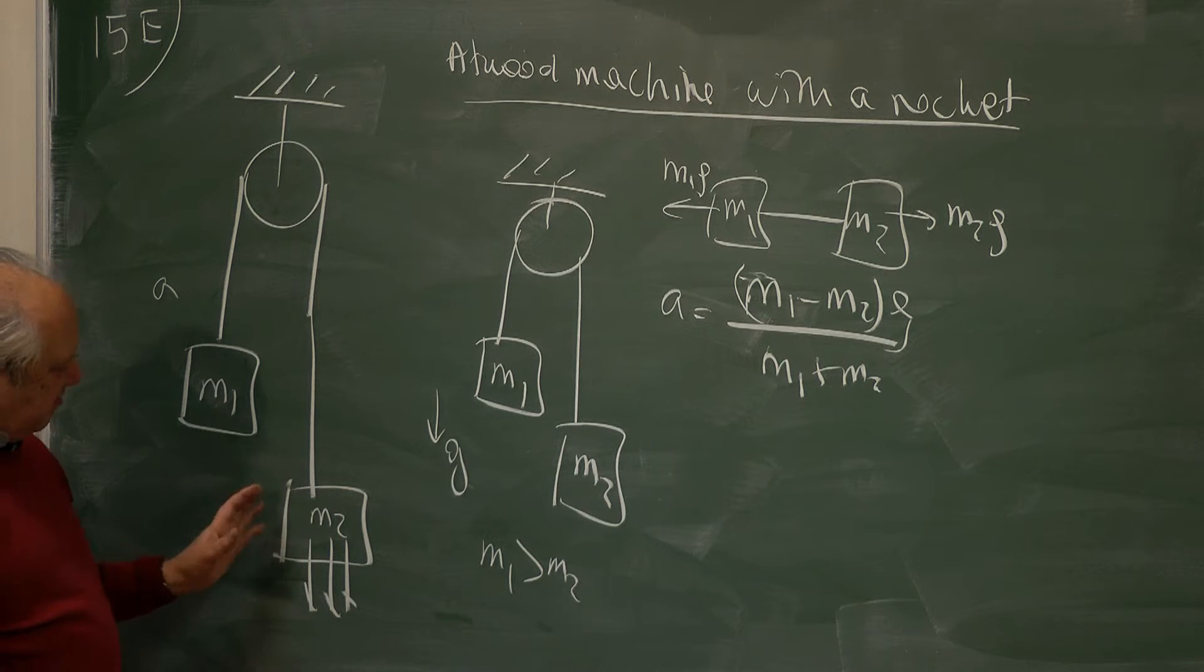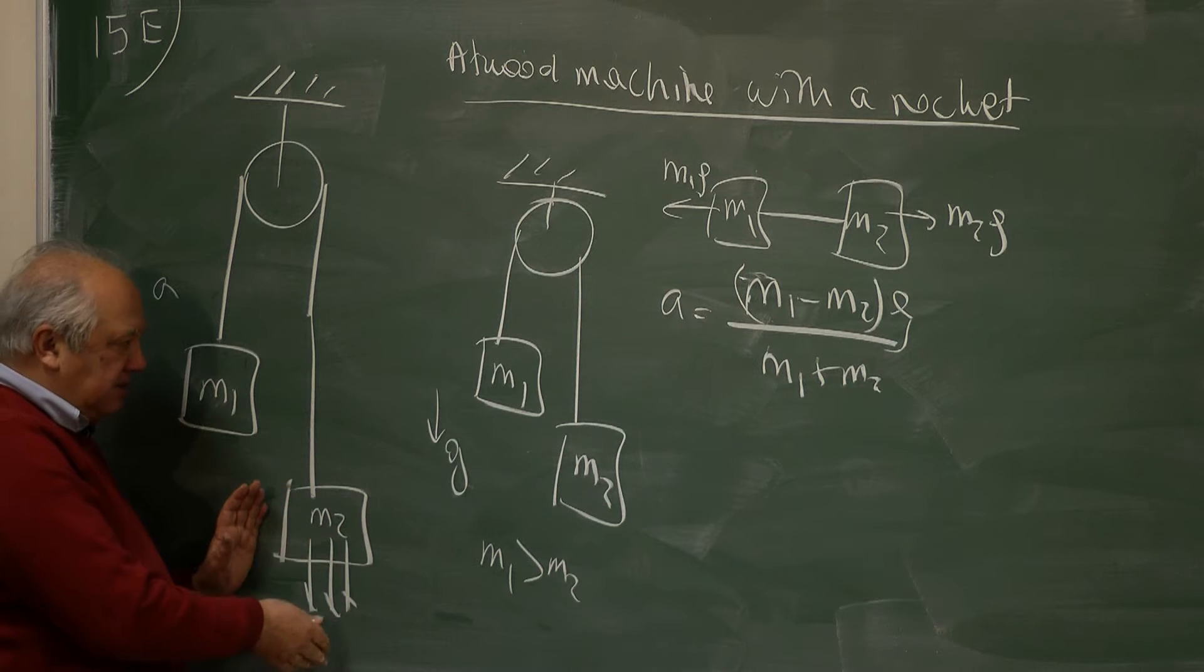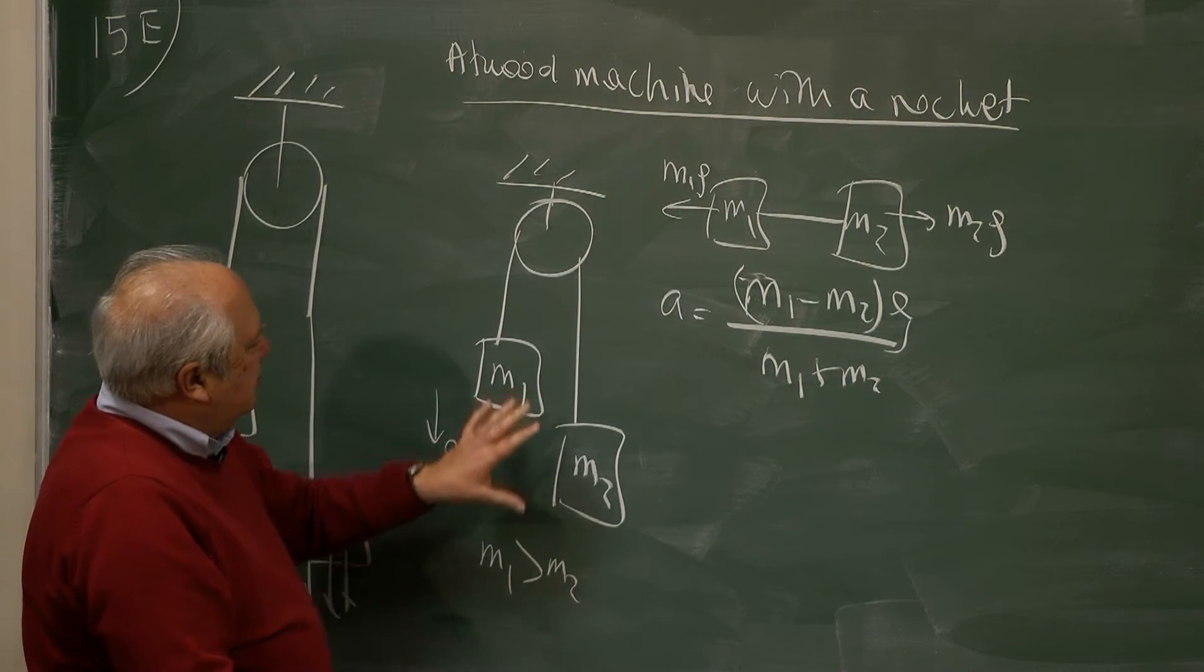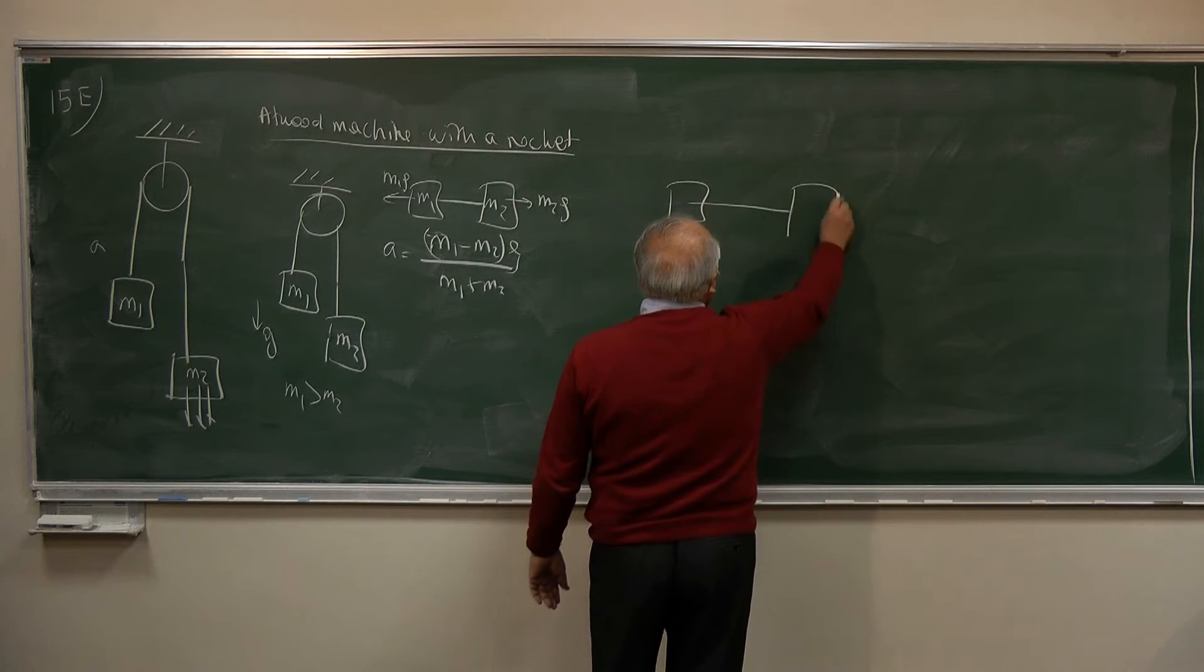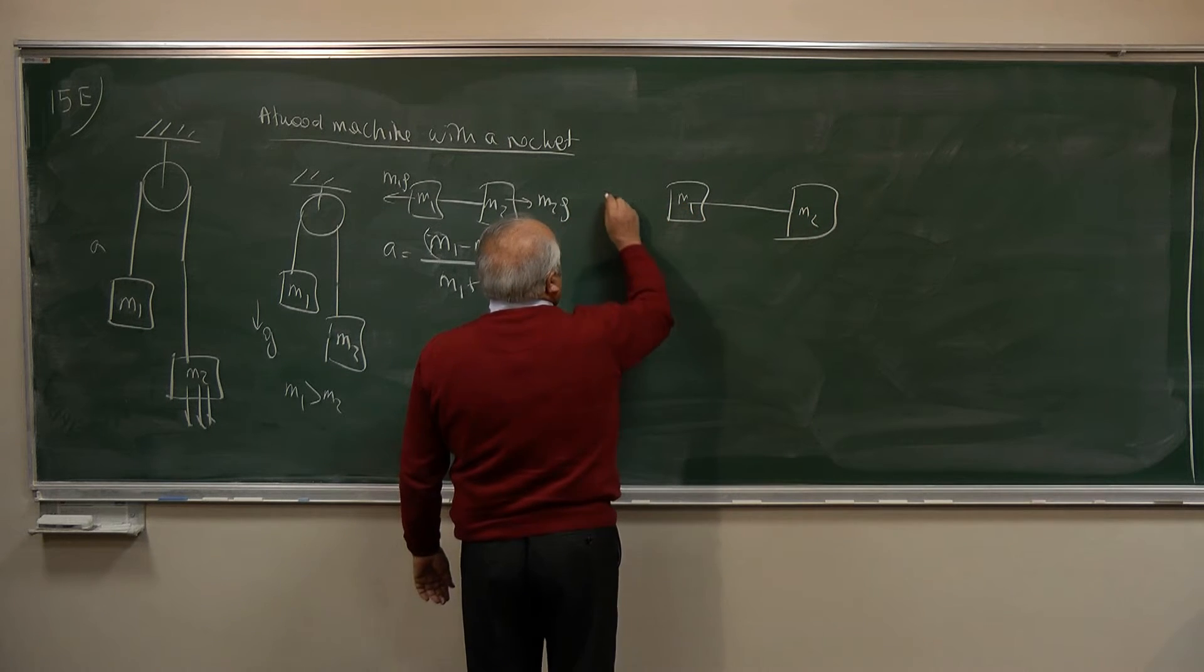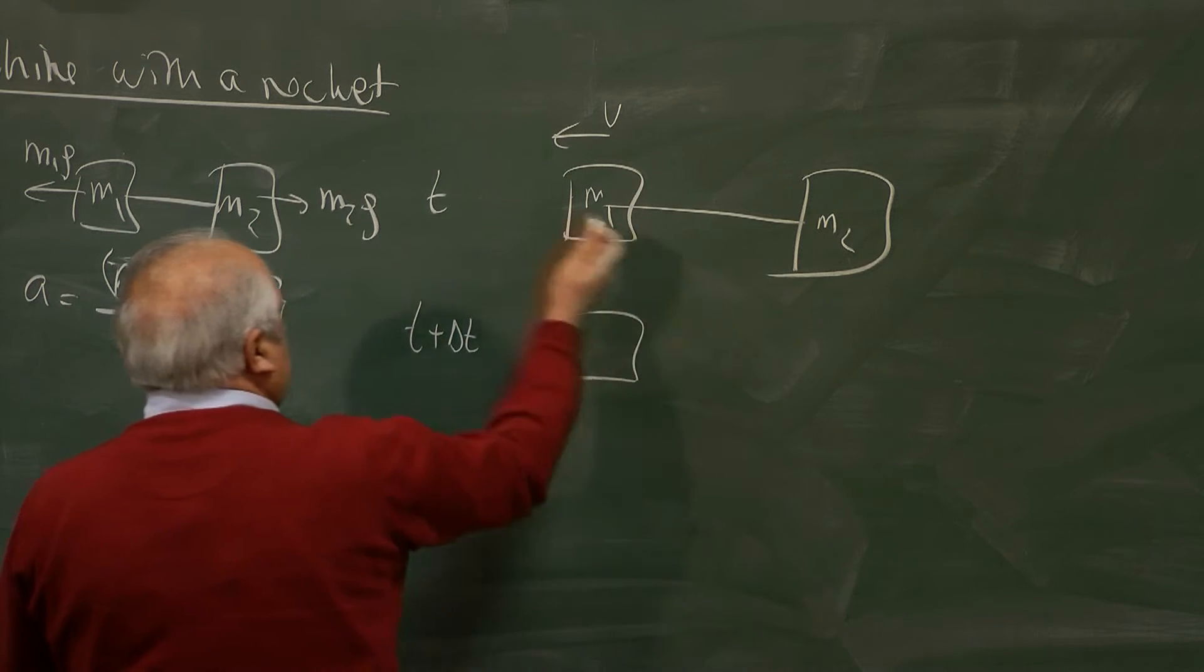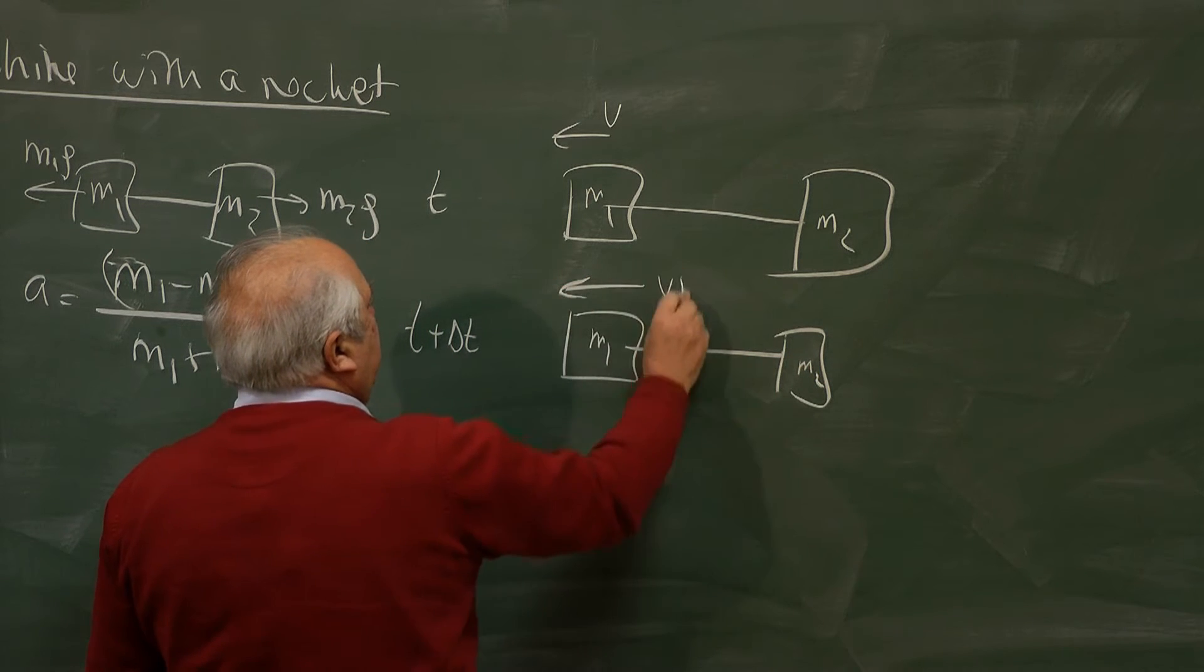Now the actual problem is a variable mass problem. Because M2 is losing mass. So I will use momentum arguments here. So let me use the same arguments for this trivial problem. Of course I will get this answer. So this is M1 M2. So at a certain time it is moving with velocity V. And at time T plus delta T, it has accelerated. It is moving with V plus delta V.